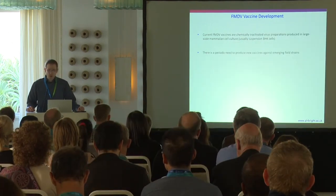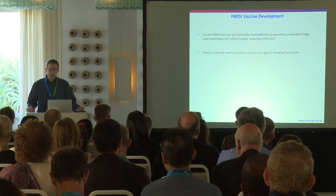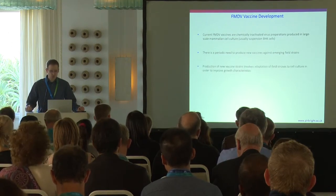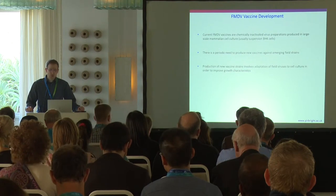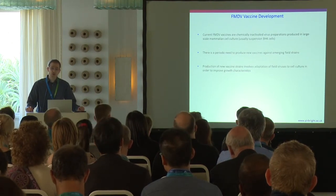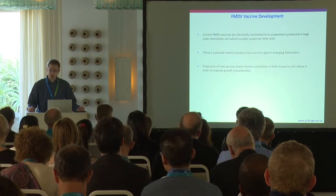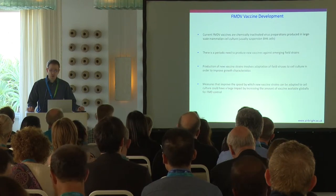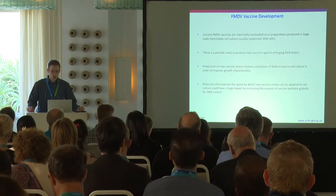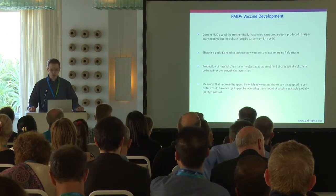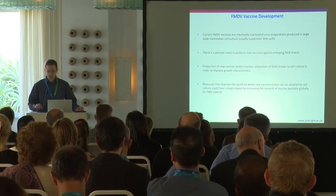As we've heard, there's a periodic need to produce new vaccine strains against various emerging field strains. Production of new vaccine strains involves adaptation of field viruses to cell culture in order to improve the growth characteristics of these viruses. Any measures that could improve the speed by which new vaccine strains can be adapted to cell culture could have a large impact by increasing the amount of vaccine available globally for FMD control.